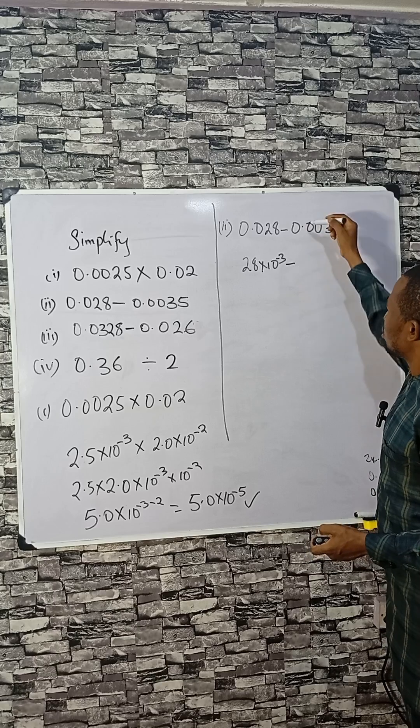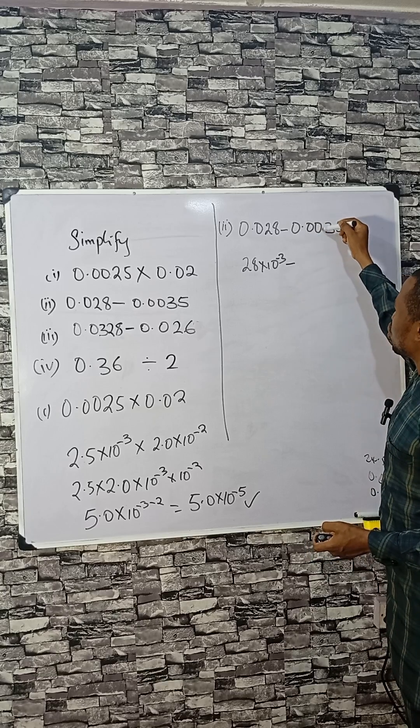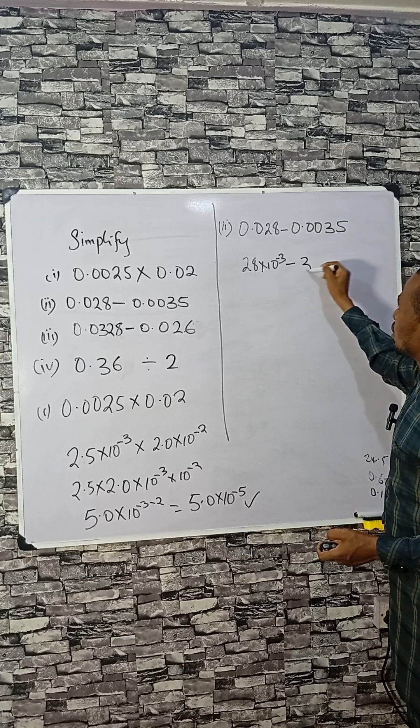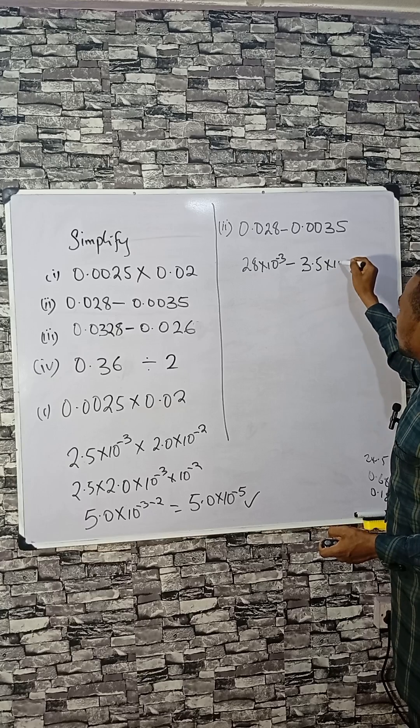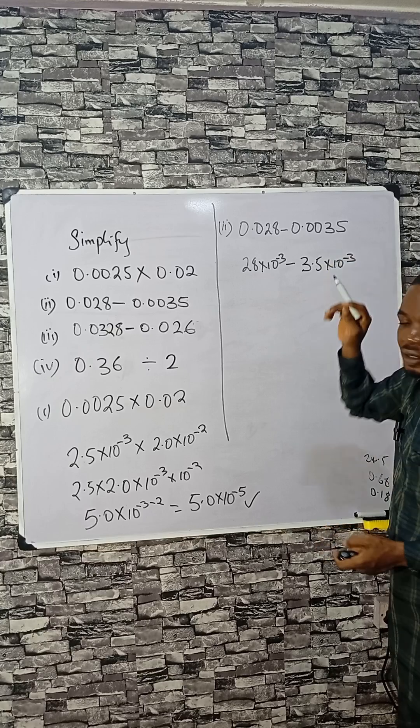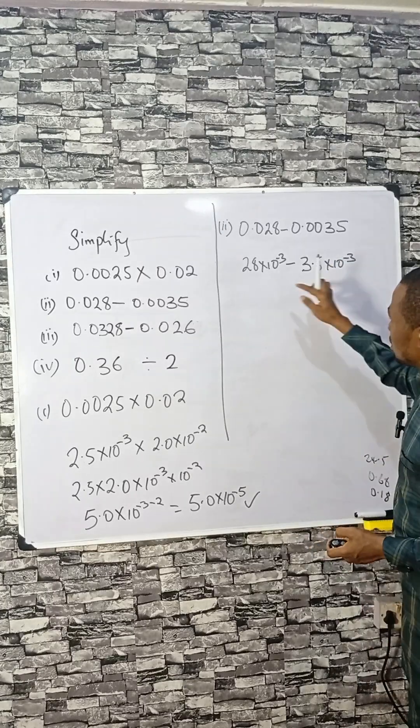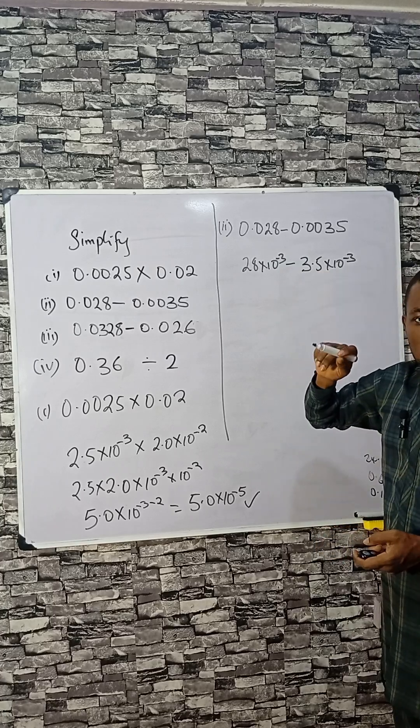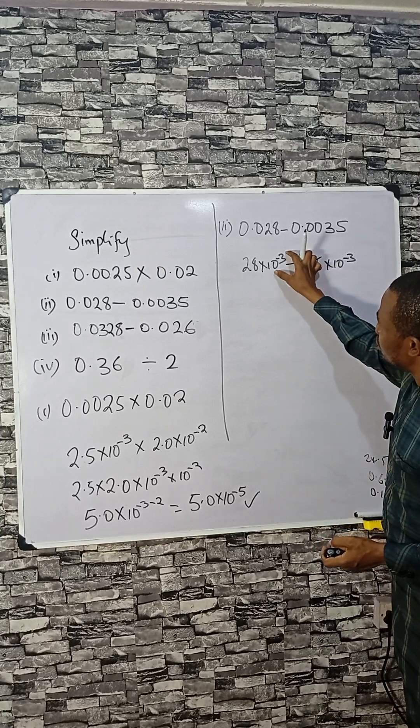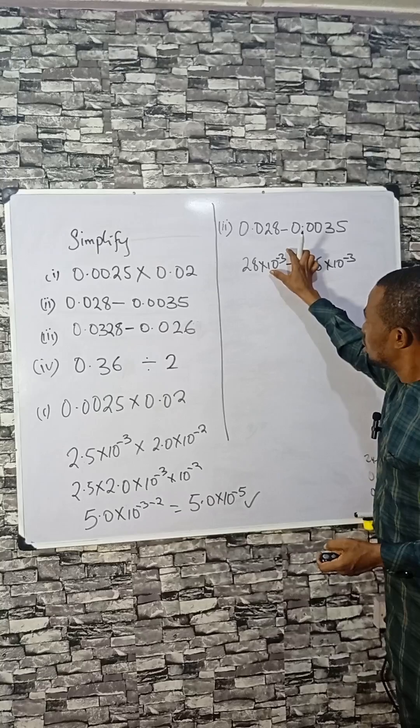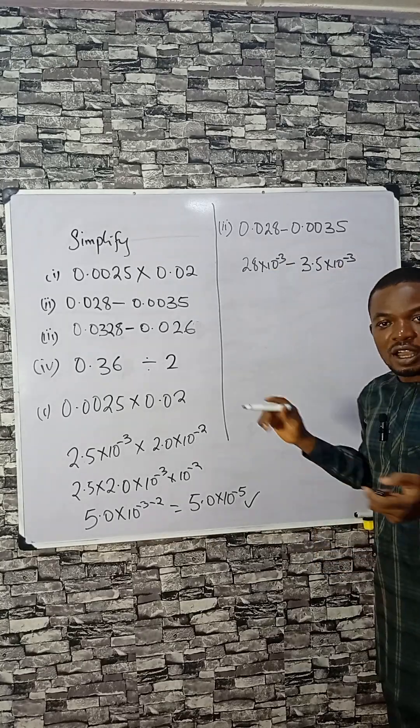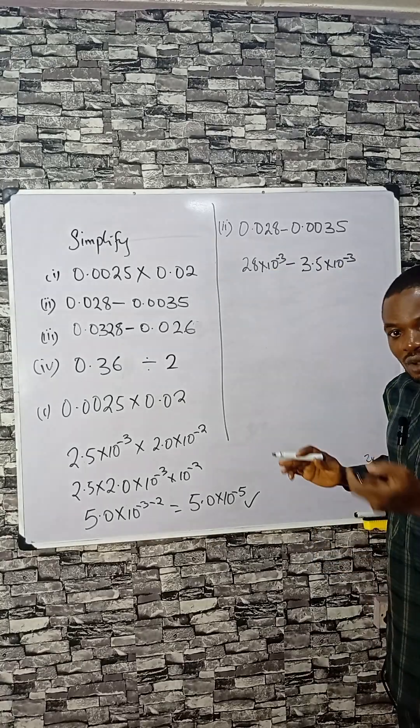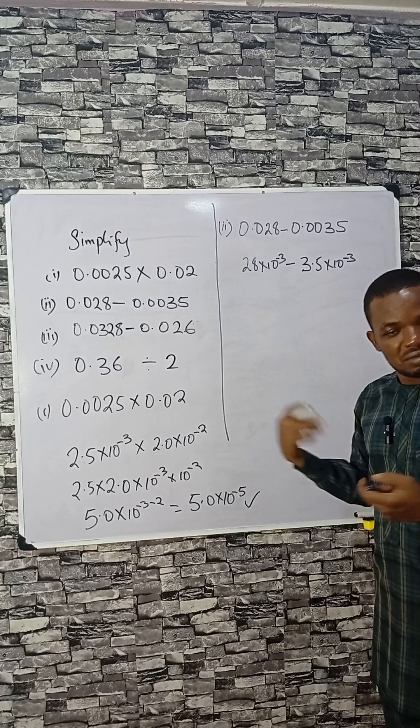Then minus one, two, and three, 3.5 times 10 raised by minus 3. There is a reason for making this 28 and 3.5. I want to ensure that they all have 10 raised by minus 3 here and here. Then we can factor out and subtract what is left.